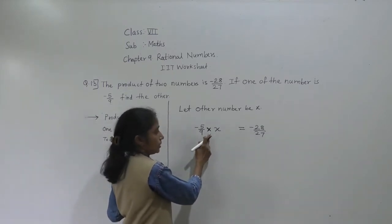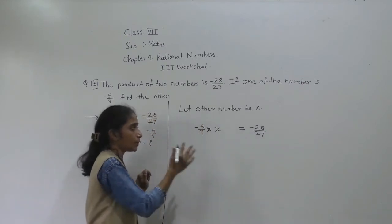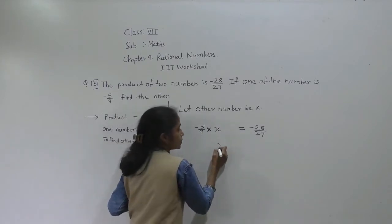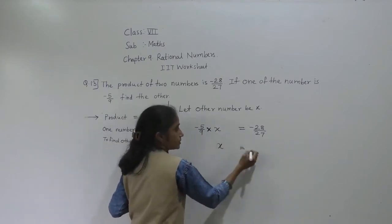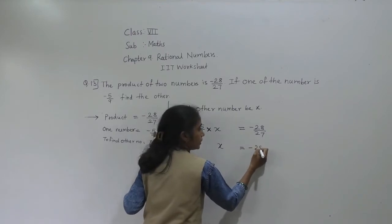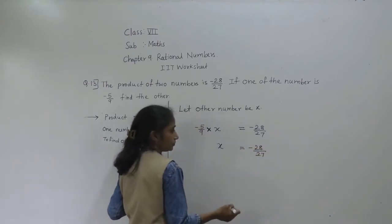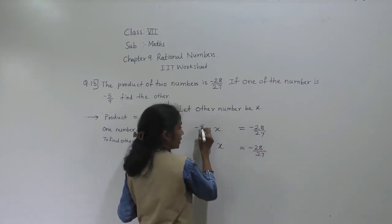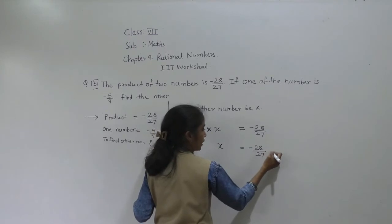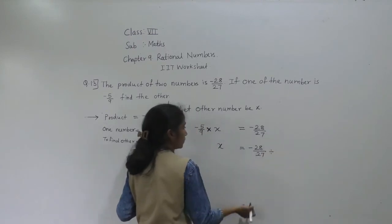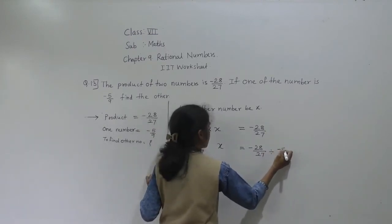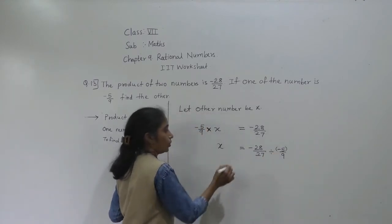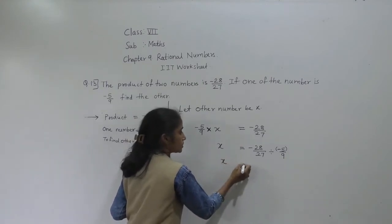Now see — this minus 5 upon 9 is multiplied here. If we transfer it to the other side, it will become divided. So keep X here as it is, then X equals minus 28 upon 27, divided by minus 5 upon 9.